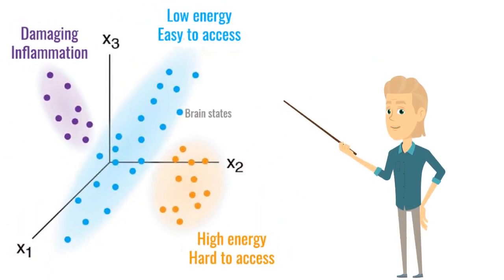We can understand how these control networks work by looking at this space of all the possible brain states we can be in.